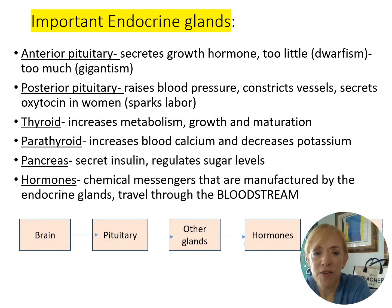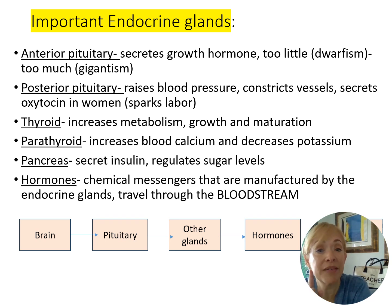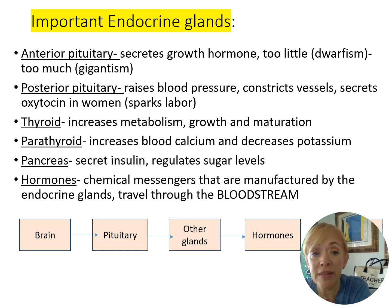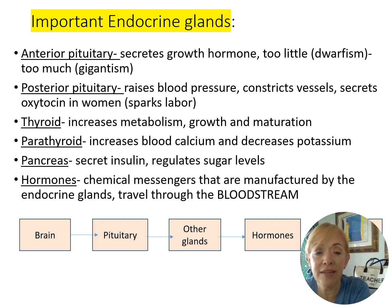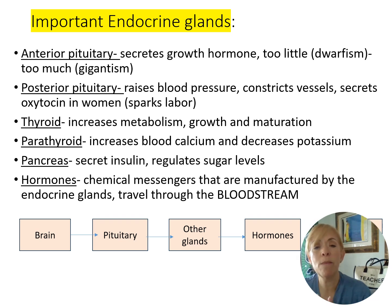Know these endocrine glands: the anterior pituitary secretes growth hormones — too little causes dwarfism, too much gigantism. The posterior pituitary raises blood pressure, constricts blood vessels, and secretes oxytocin, which sparks labor in women. The thyroid increases metabolism, growth, and maturation. The parathyroid increases blood calcium and decreases potassium. The pancreas secretes insulin to regulate blood sugar. Hormones are chemical messengers that travel through the body to create change.